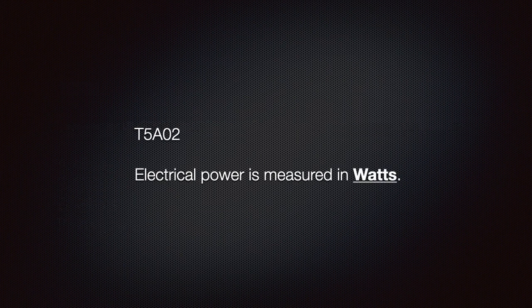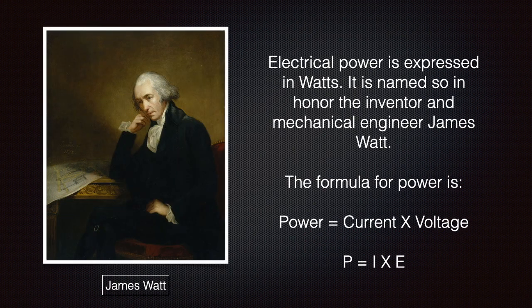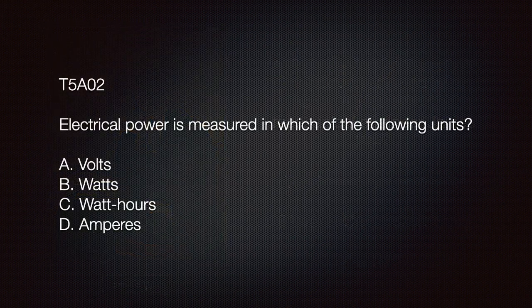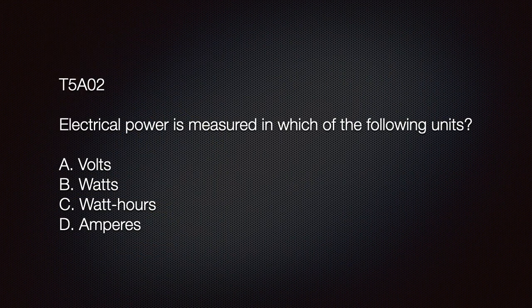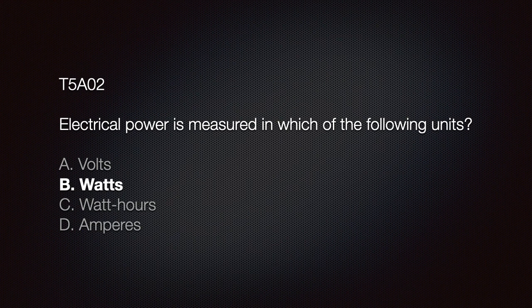We also need to understand that electrical power is measured in watts. Electrical power is expressed in watts. It is named so in the honor of the inventor and mechanical engineer, James Watt. The formula for electrical power is, power equals current times voltage, or P equals I times E. Our exam question might look like this. Electrical power is measured in which of the following units? A volts, B watts, C watt hours, or D amperes. You should have selected B watts.